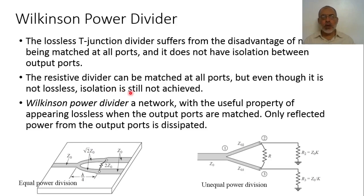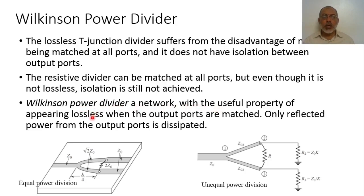Now, in this video, we are going to introduce another type of power divider, which is known as the Wilkinson power divider. It is characterized by being matched at all ports, and at the same time the output ports are isolated with respect to each other. The Wilkinson power divider is a network with the useful property of appearing lossless when the output ports are matched. Only reflected power from the output ports is dissipated in a shunt resistance between the two arms of the output.